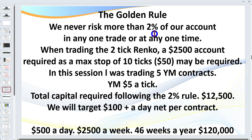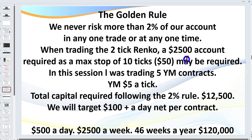We're going to be looking at the two-tick Renko on the YM. A two-tick Renko means at times my stop loss may be as high as 10 ticks, which is $50 — because on the YM every price increment is $5. Two percent of $2,500 is $50, so that's what I need per contract. You don't have to put all of that in your trading account; you need some as a cash reserve and some in your broker's account. I'm going to show you how to start much smaller and build your account.